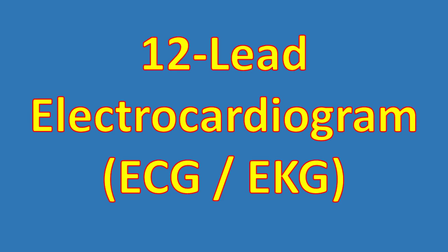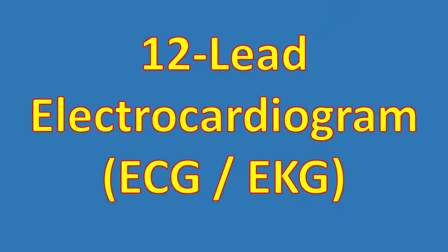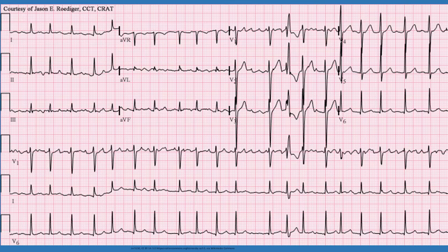For all patients with suspected new onset atrial fibrillation, a 12-lead electrocardiogram, also known as 12-lead ECG or EKG, is obtained. On the ECG of atrial fibrillation, there are no discrete atrial contractions as evidenced by P-waves, but there are rapid, low amplitude, continuously varying fibrillatory waves, as shown here by the blue arrows.